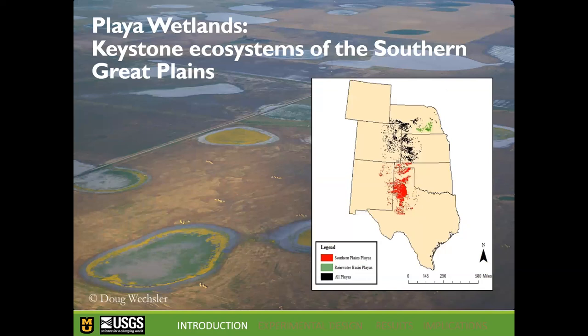Over 90% of the land in this area is privately owned, which means conservation efforts must keep private landowners as a priority stakeholder. Playa wetlands are persistent and ubiquitous throughout the Great Plains, ranging from Nebraska down into Texas. I worked specifically in two regions: the Rainwater Basin in Nebraska and the Southern Great Plains region in Texas.